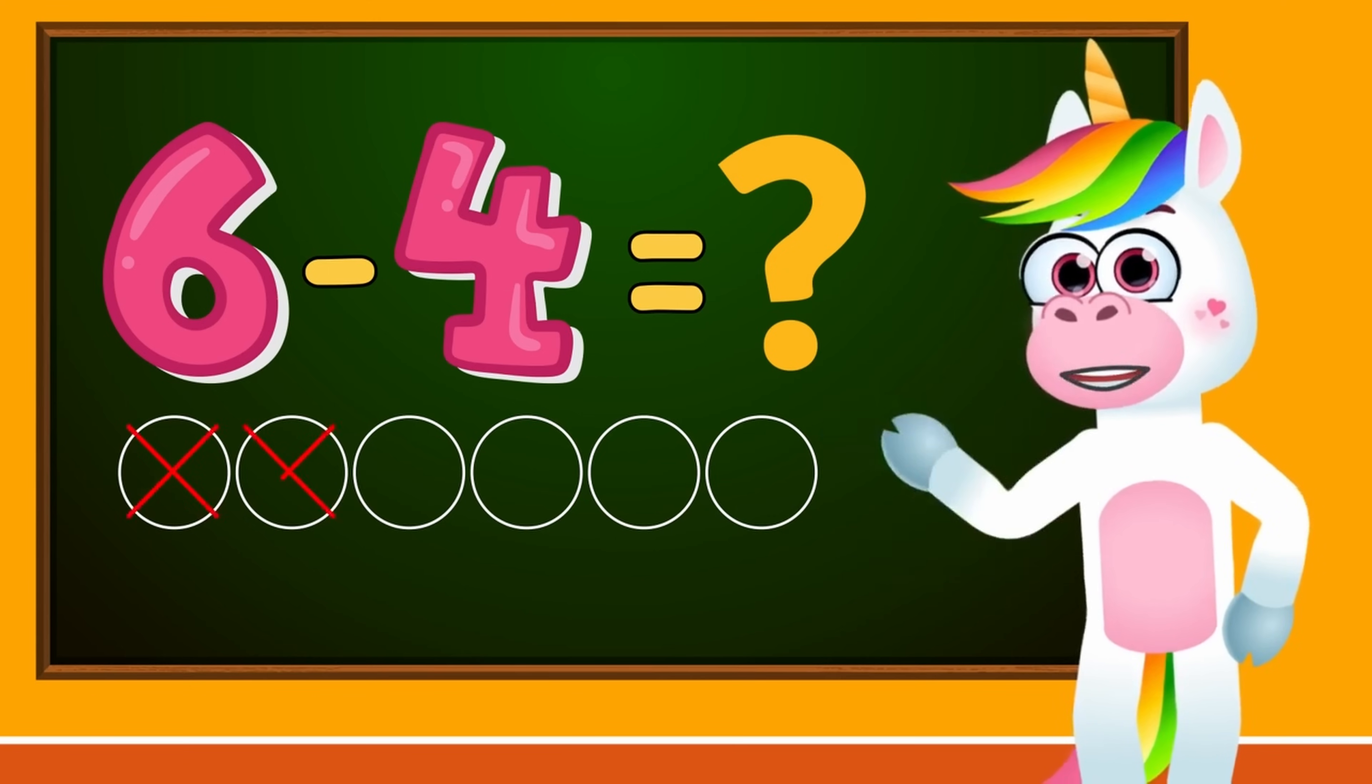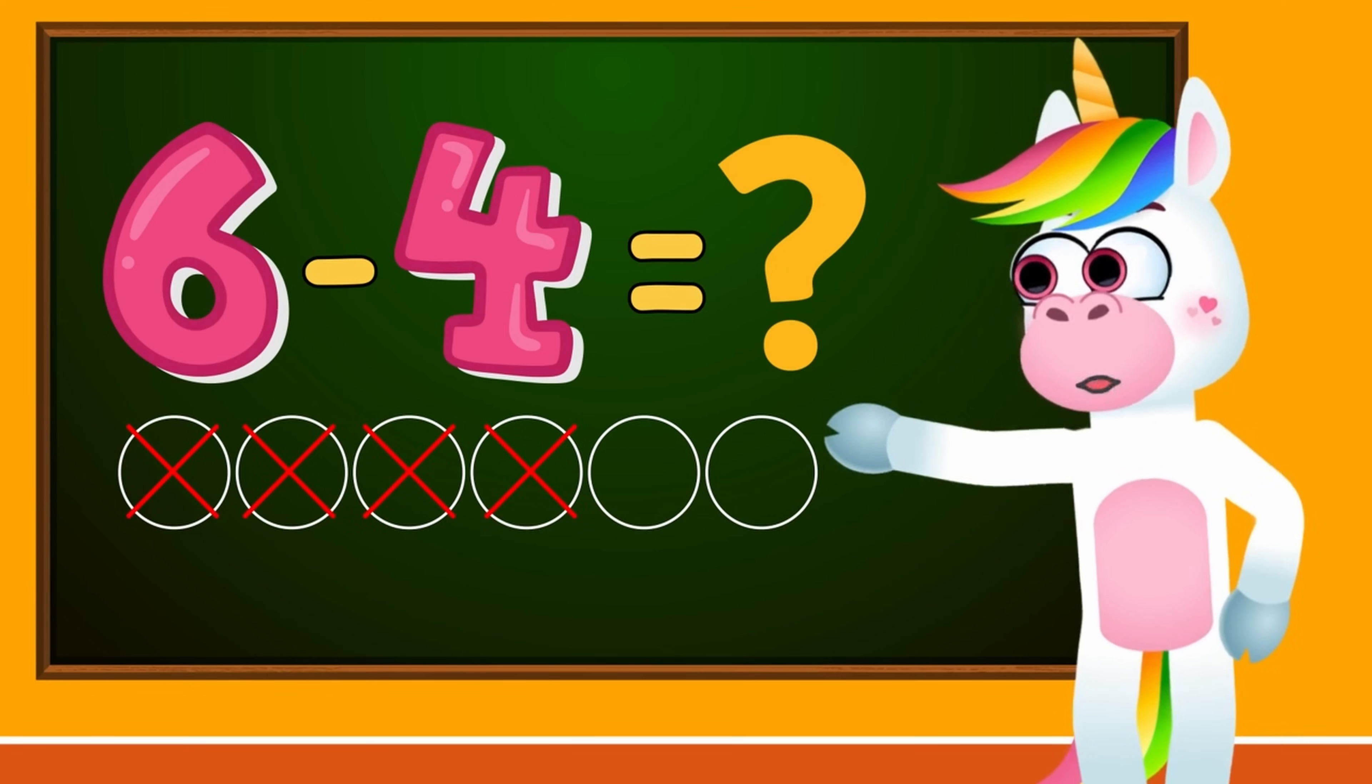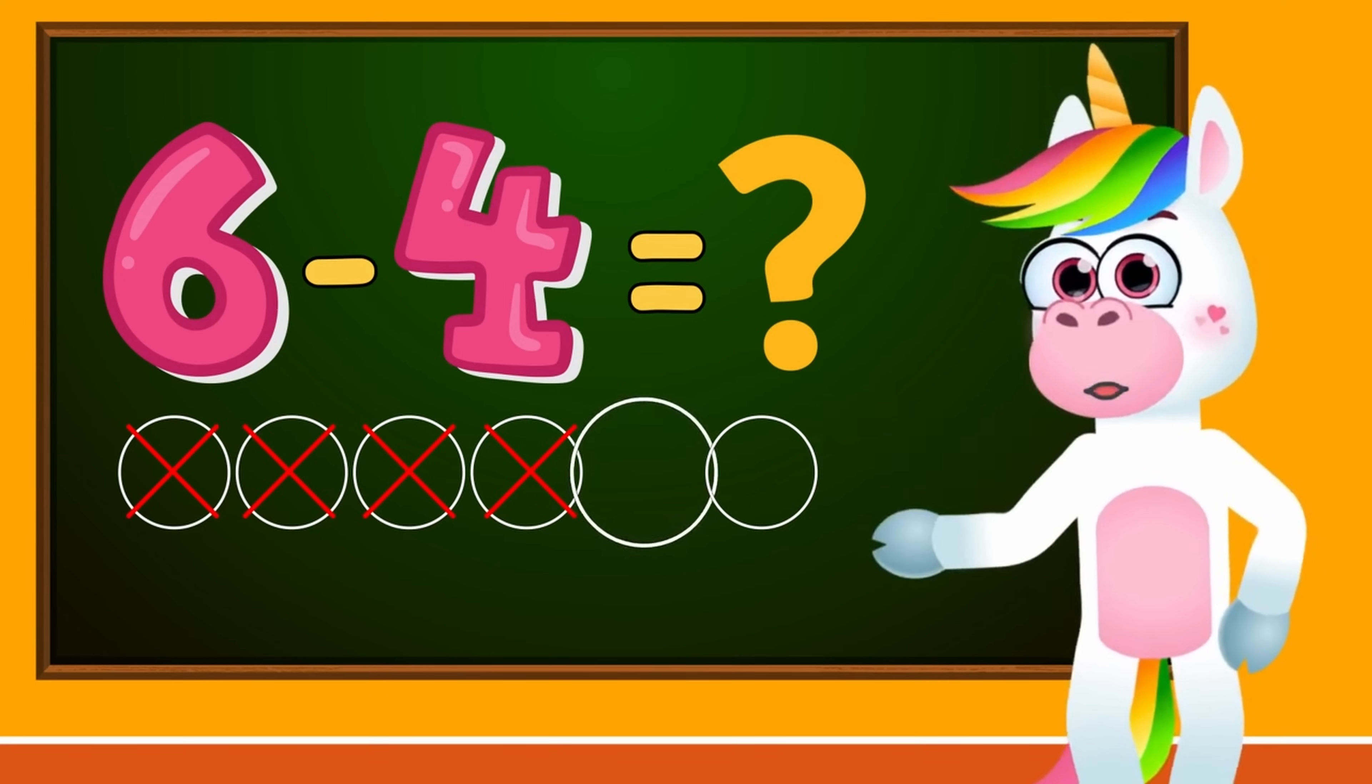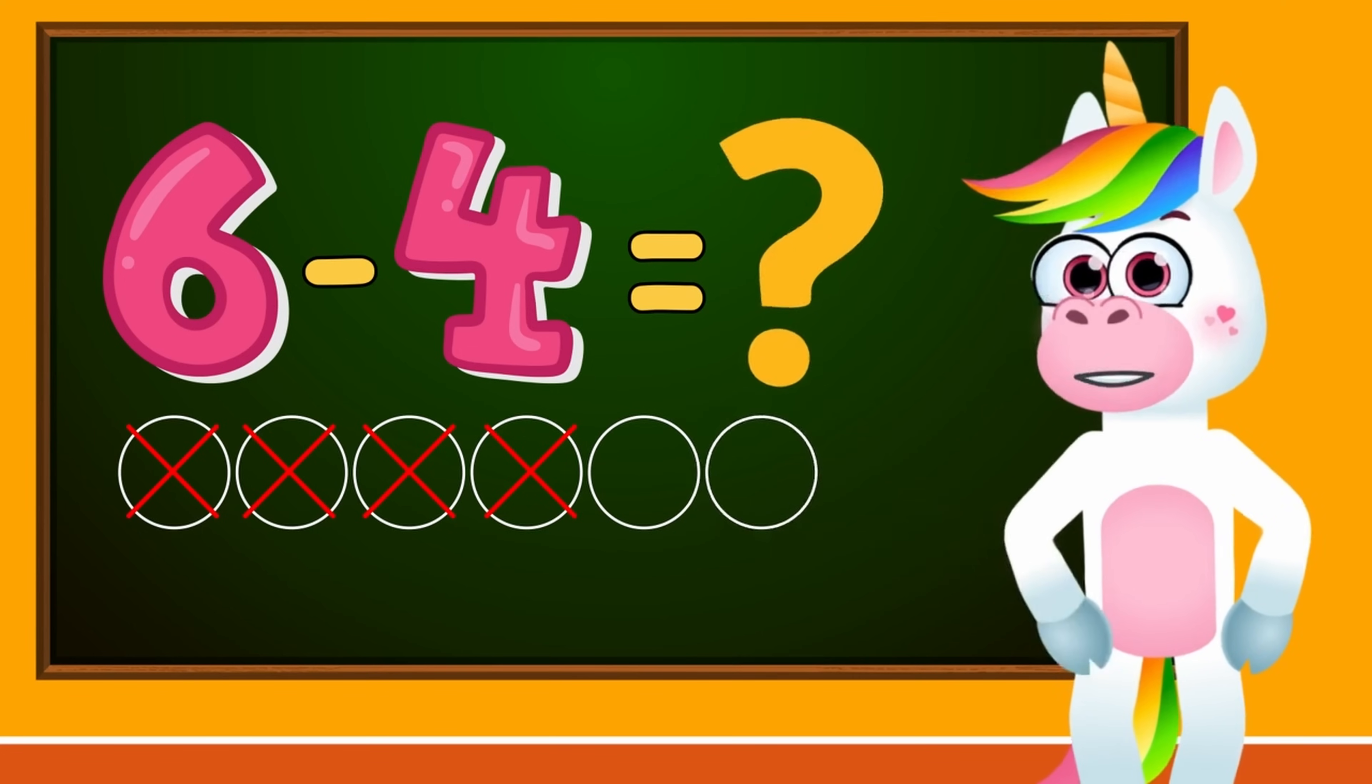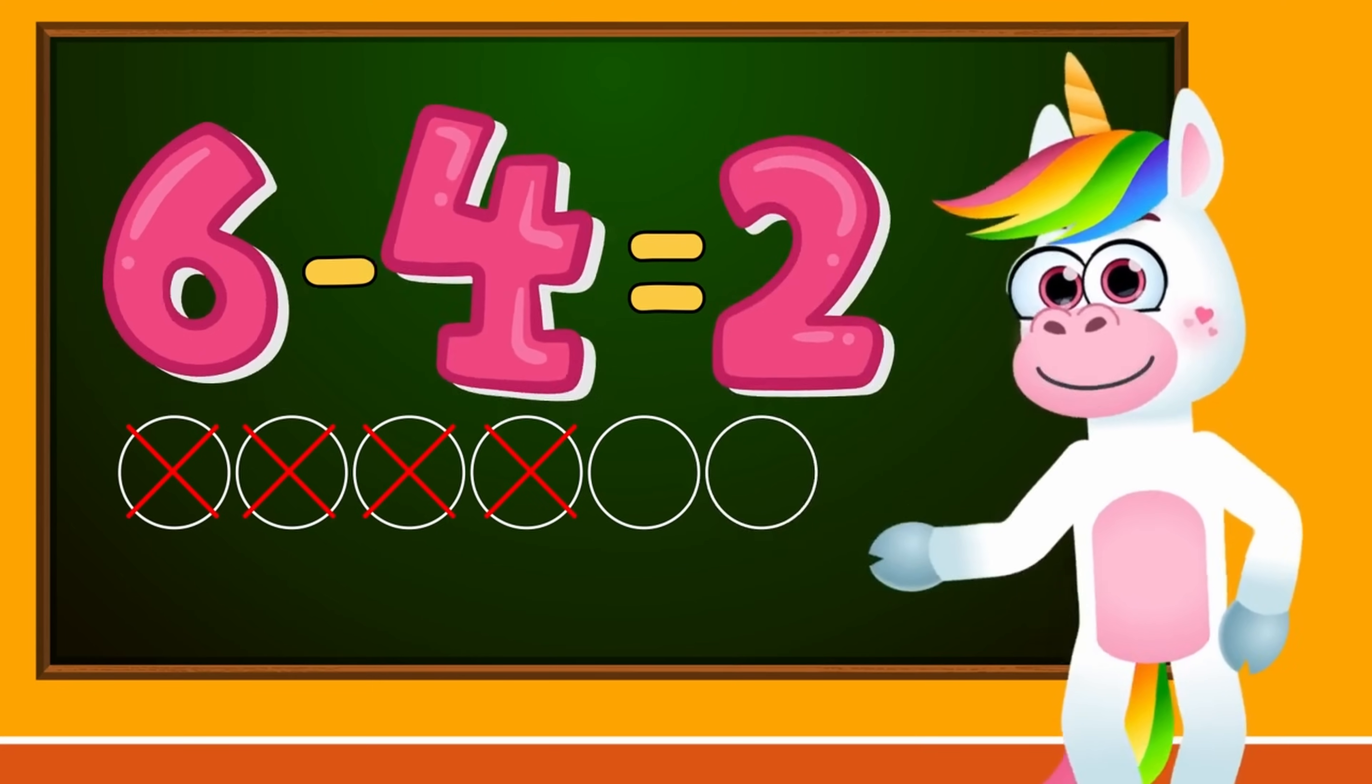1, 2, 3, 4. The number of circles we have left is the correct result. 1, 2. So kids, 6 minus 4 equals 2.